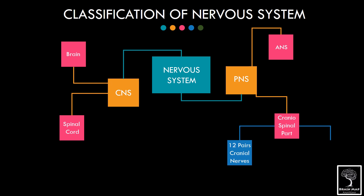The craniospinal component of the peripheral nervous system is comprised of the cranial nerves and spinal nerves. There are 12 pairs of cranial nerves and 31 pairs of spinal nerves in humans. The cranial nerves are denoted by Roman numerals.